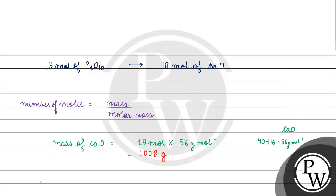So the final answer for this question is mass of calcium oxide equals 1008 grams. I hope you understood well, thank you and all the best.